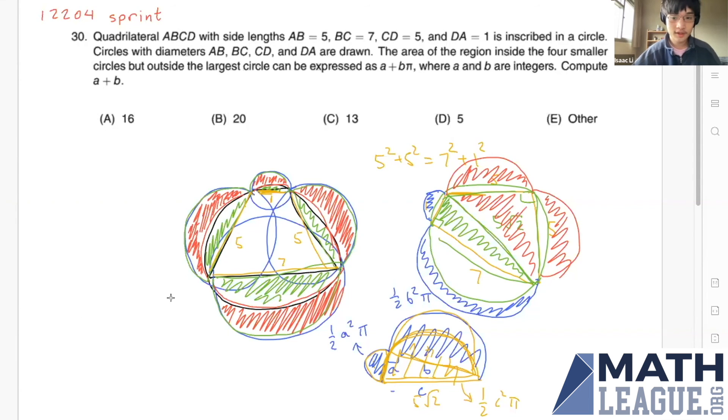So the area of these two triangles sums up to one half times one times seven plus one half times five times five. And this evaluates to seven over two plus 25 over two, 32 over two equals 16. And our answer format indicates that a is 16 and b is zero. So our answer is 16.